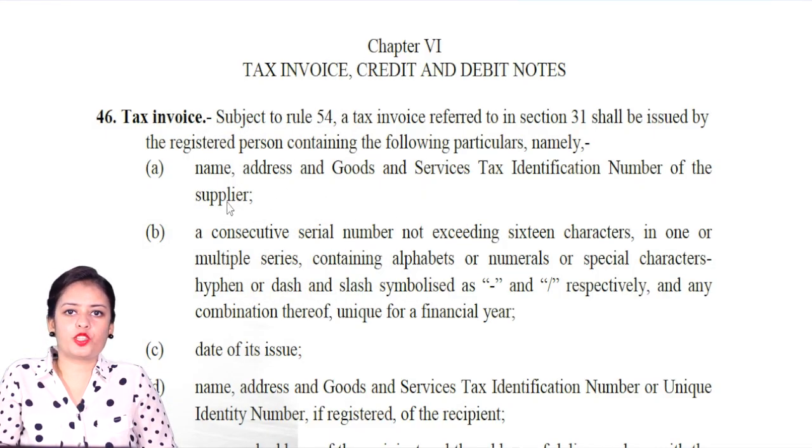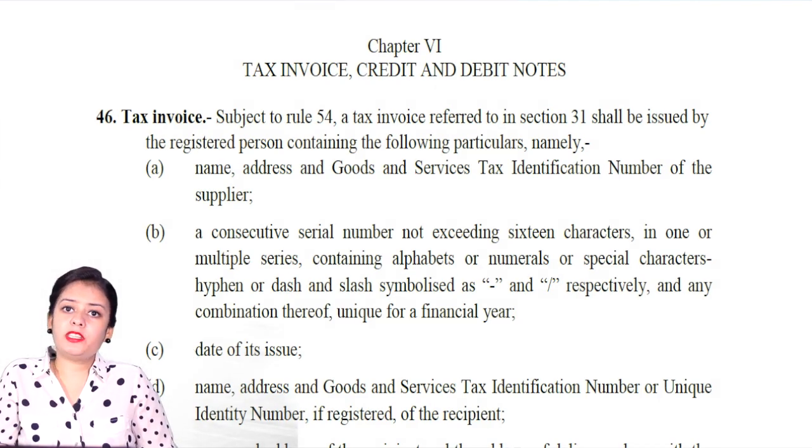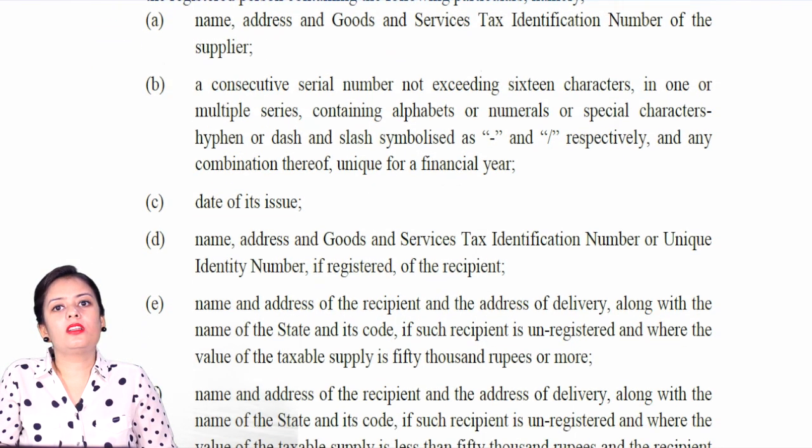We have to incorporate those changes into our invoice. First of all, there are 16 items that are required. You can see the list of 16 items, and all these items should be in your GST invoice. What is specific about this?